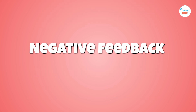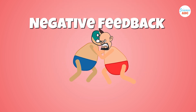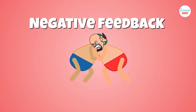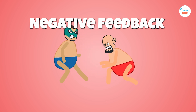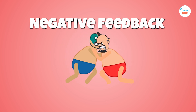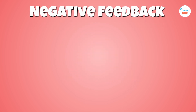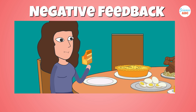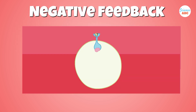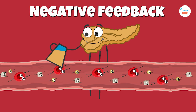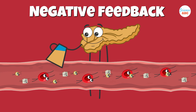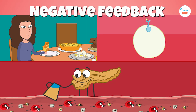Negative feedback is like a tug-of-war, involving a push and pull to maintain homeostasis. Negative feedback works like this: a change occurs, a sensor will sense it and relay the information to a central hub. That central hub will then signal a response to counteract the change.